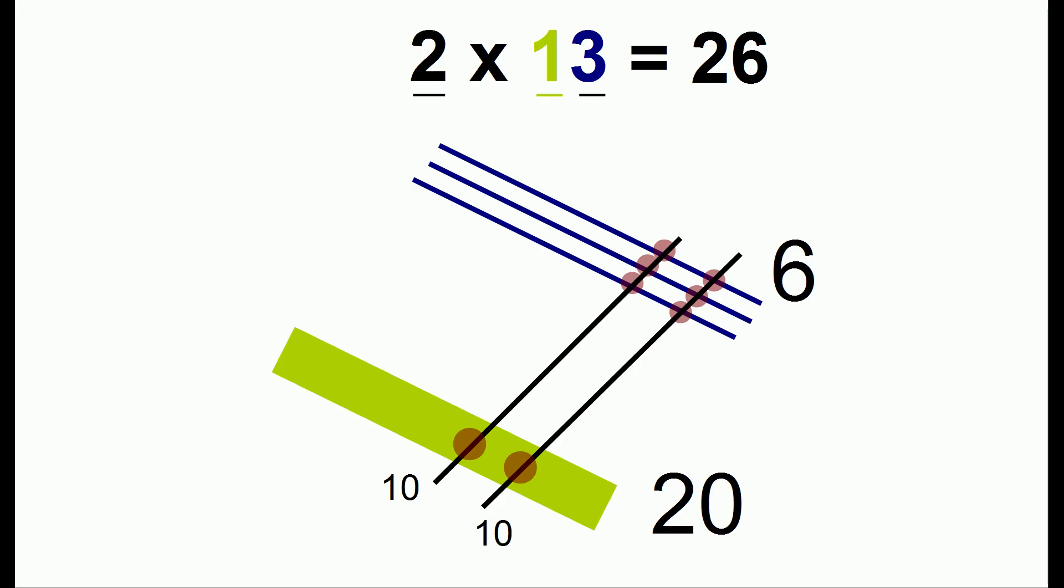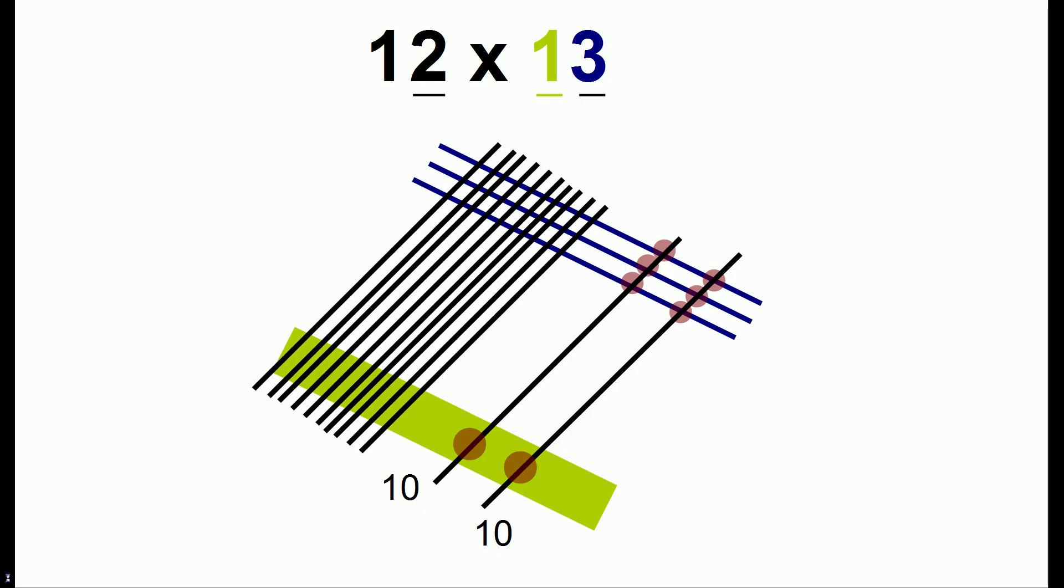So I hope you understand how this example works, because now we're going to go to a more advanced method, and we're going to imagine doing 12 by 13. So what we could do for 12 is, in addition to the two lines we already have, we could add 10 more lines.